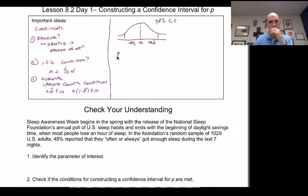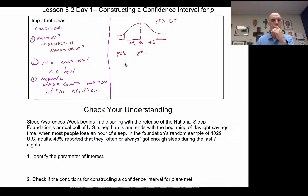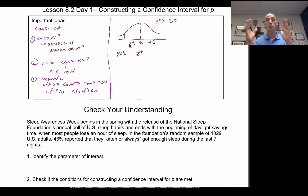For a 90% confidence interval, we have a Z value we call Z-star. Z-star is not about actual data values — it's specific to the confidence interval. Z-star is the value at which I place my interval boundaries to capture a 90% confidence interval.